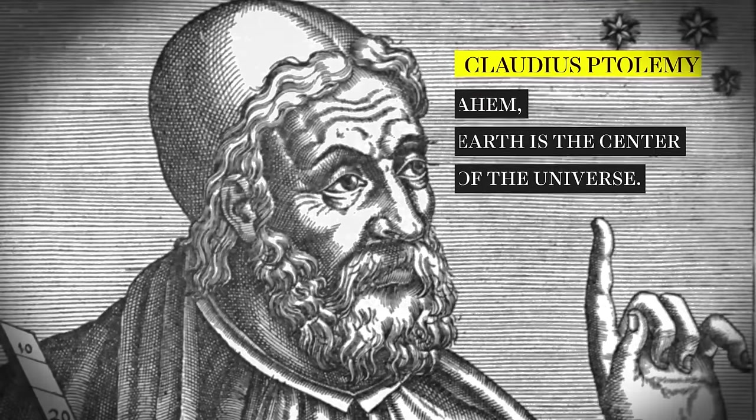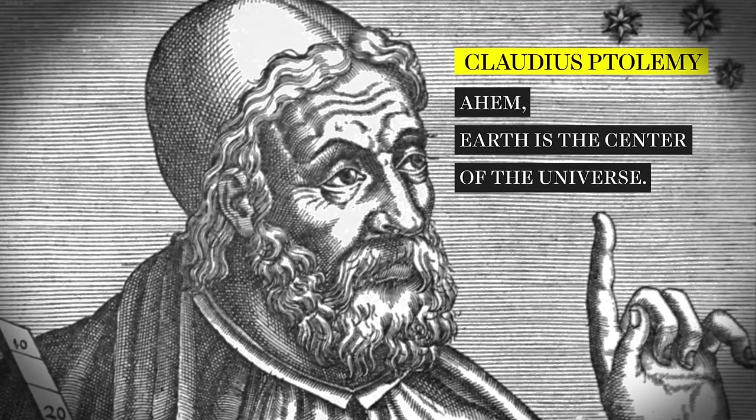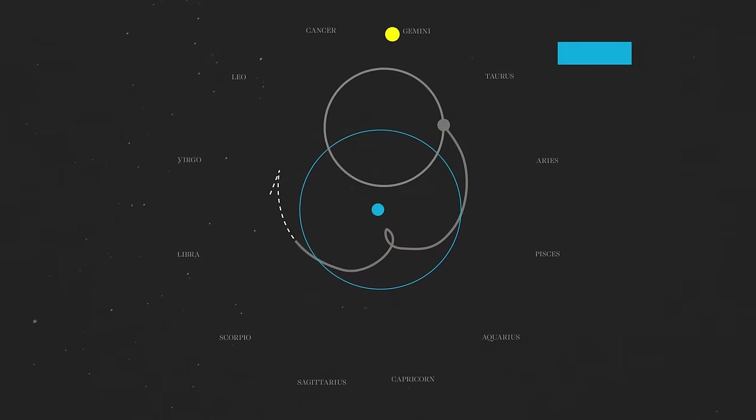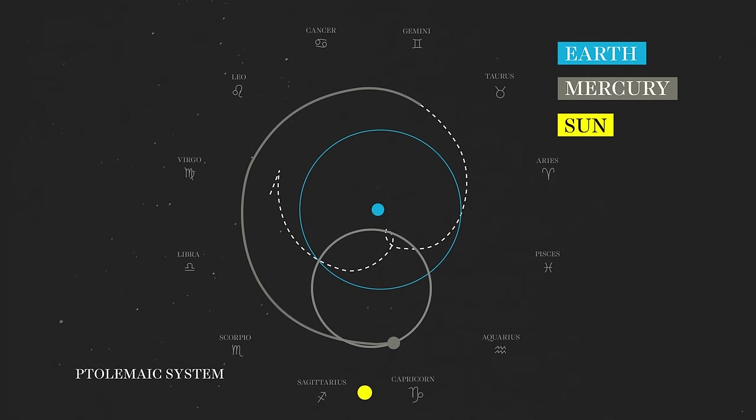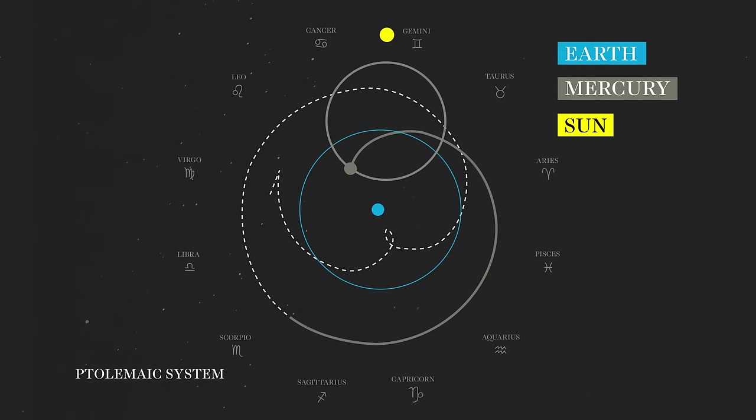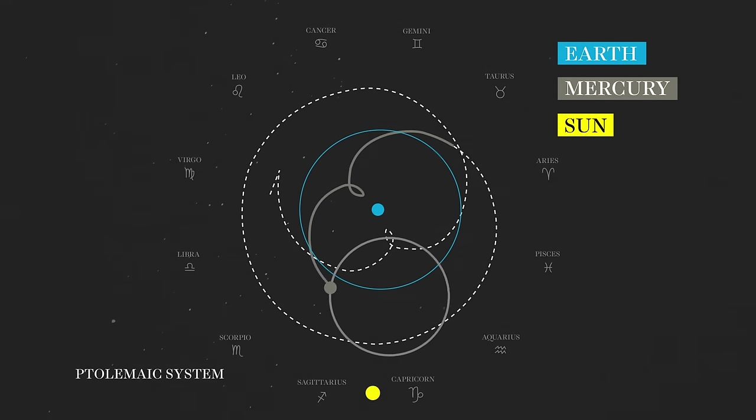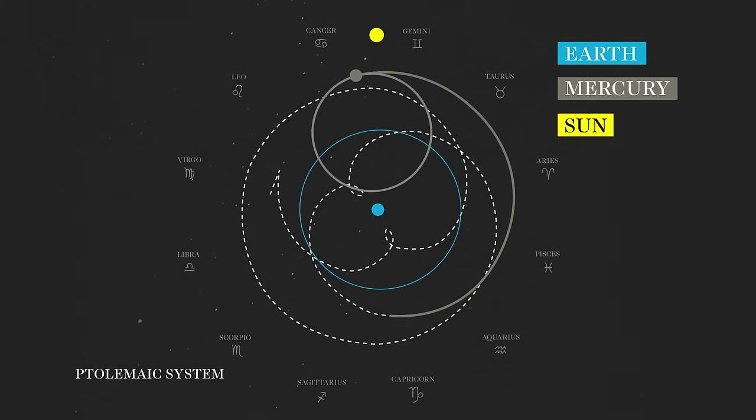In the second century, Ptolemy devised a complicated system of loops and orbits within orbits to account for the retrograde motion of planets. That model was accepted for 1,500 years because it seemed to fit the observations, even though it was completely wrong.